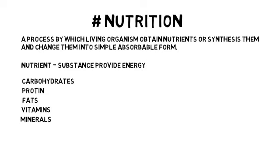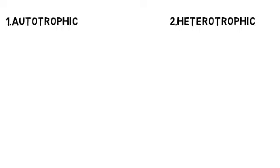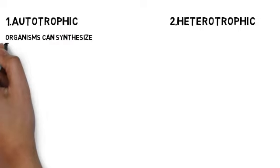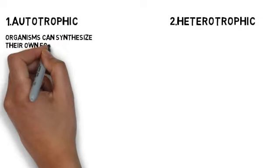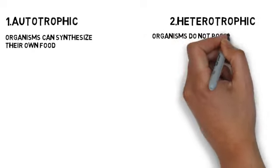The process of nutrition can be of two types. Any organism can take nutrition in two ways: one is autotrophic mode of nutrition and the other is heterotrophic mode of nutrition. In autotrophic mode, organisms can synthesize their own food, while in heterotrophic mode, organisms cannot synthesize their own food.